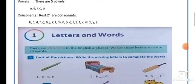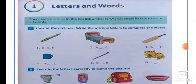In this chapter, we are going to learn letters and words. There are 26 letters in the English alphabets. We know how many alphabets are - 26.